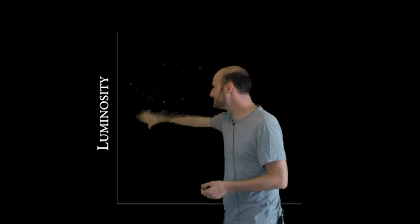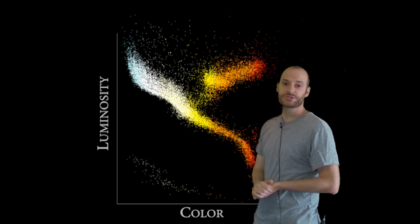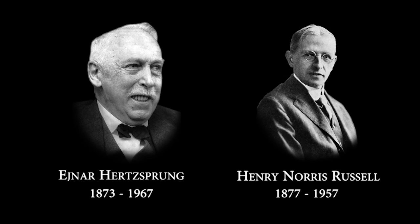Now, if we plot the luminosity and color of nearby stars, you will see a pattern that was first observed by Hertzsprung and Russell.